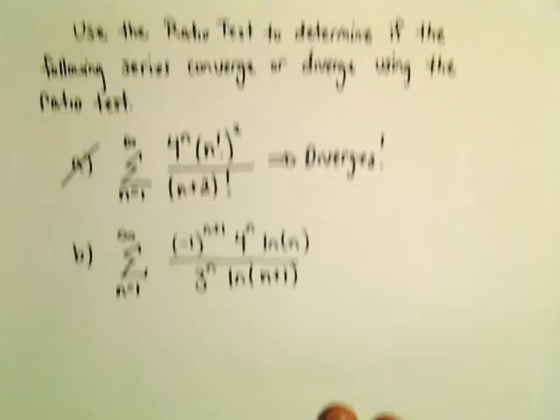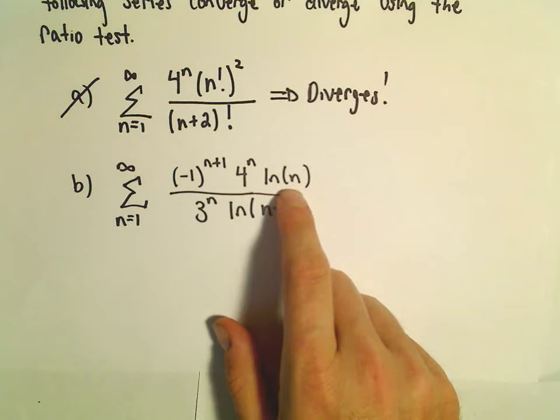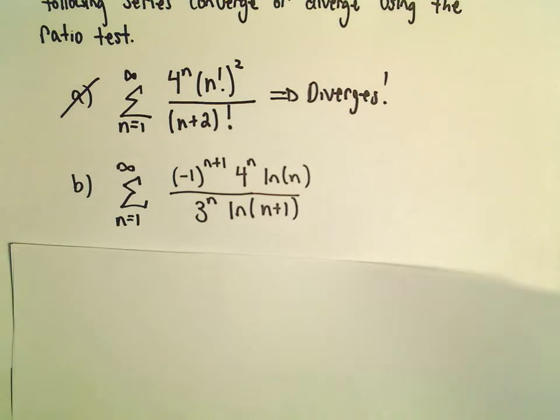All right, here we're going to look at one more example. So in part B, we've got this series: negative 1 to the n plus 1 times 4 to the n times the natural logarithm of n, over 3 to the n times the natural logarithm of n plus 1.